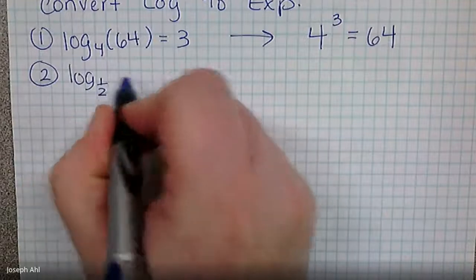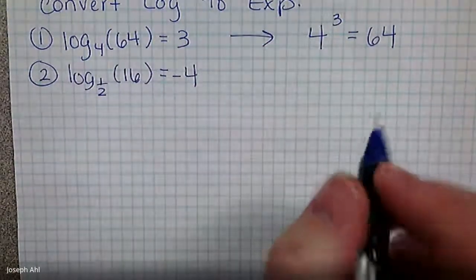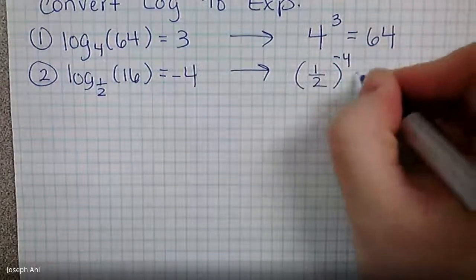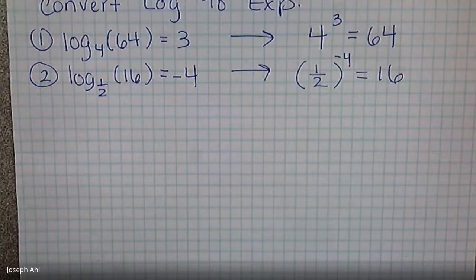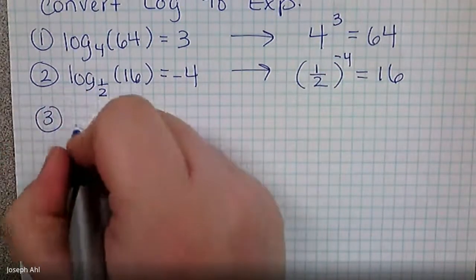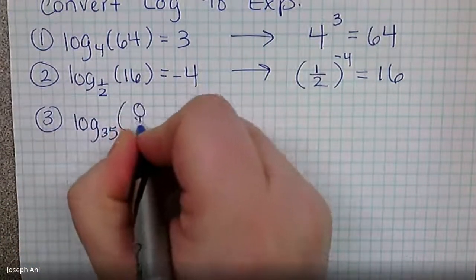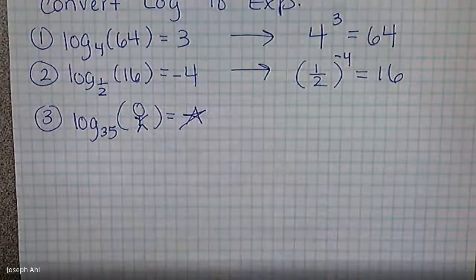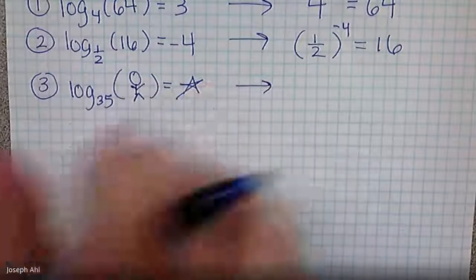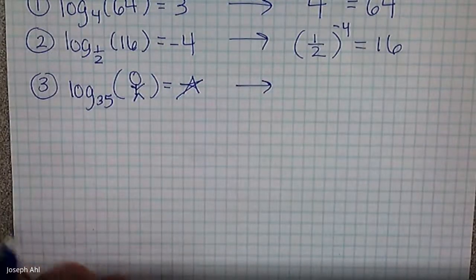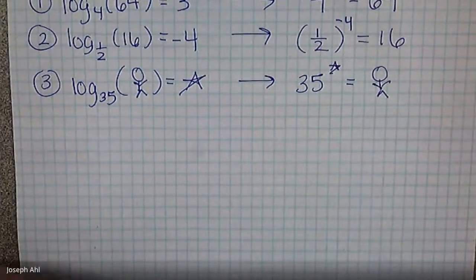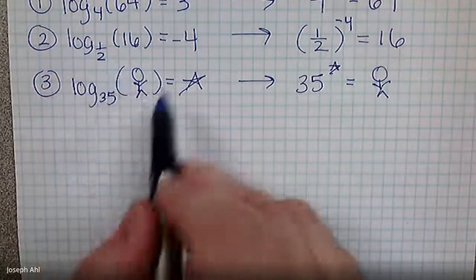Next: log base one half of 16 equals negative four. In exponential form: one half to the negative four equals 16. That checks out — one half to the negative fourth is the same as two to the positive fourth, which is 16. And just to make sure we know where symbols go regardless of form: log base 35 of stick figure equals star converts to 35 to the star equals stick figure. No matter what the expression looks like, the conversion works the same way.